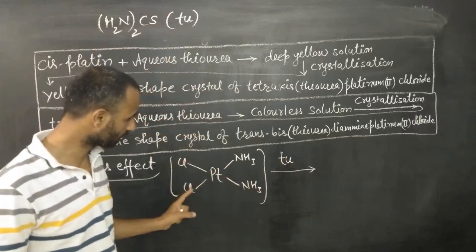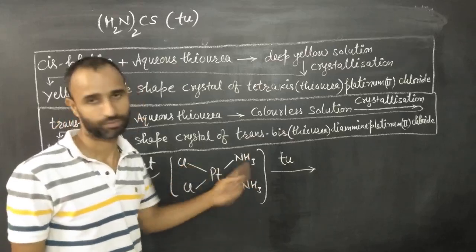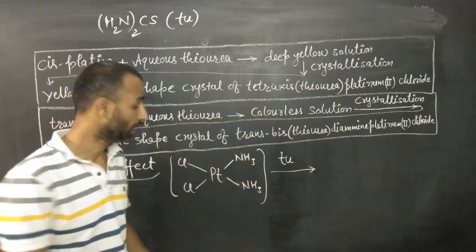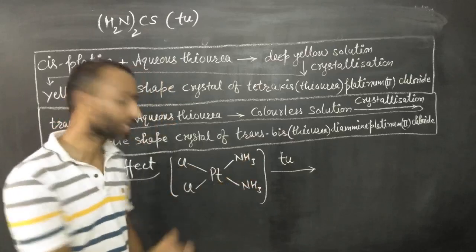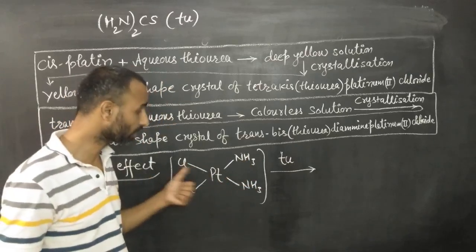Now when thiourea is added, what would happen? There is a chance of removal of chlorine or ammonia. But you know, Pt-N bond is stronger than Pt-Cl bond.